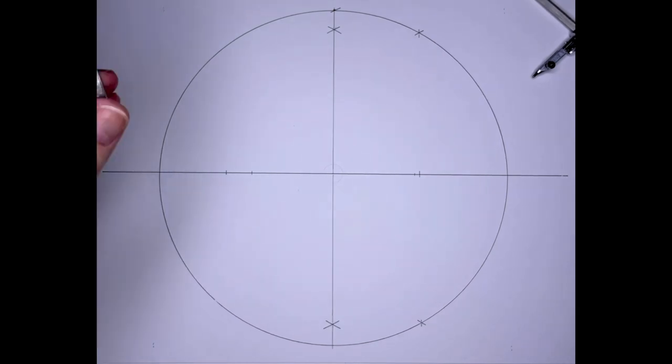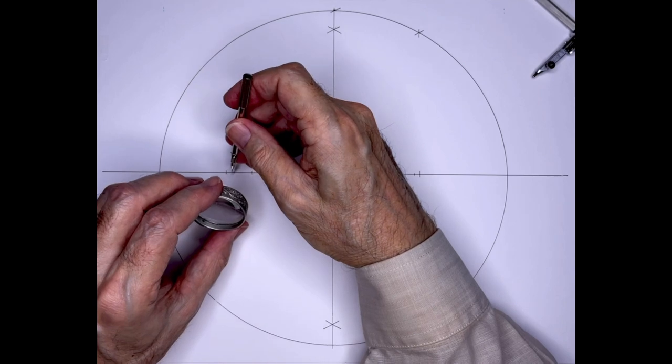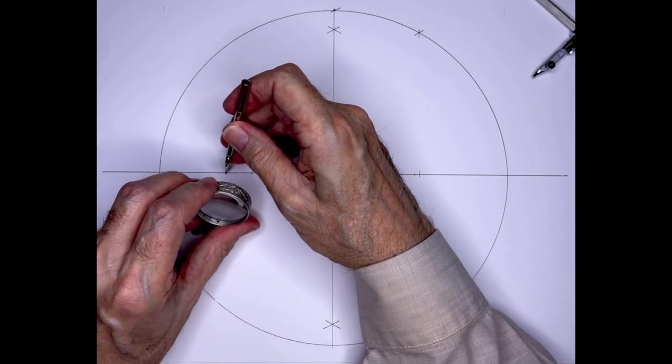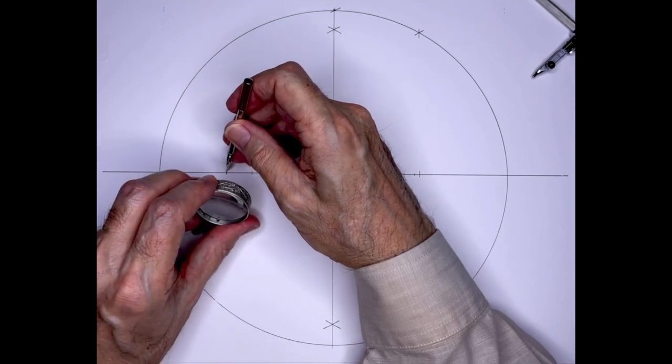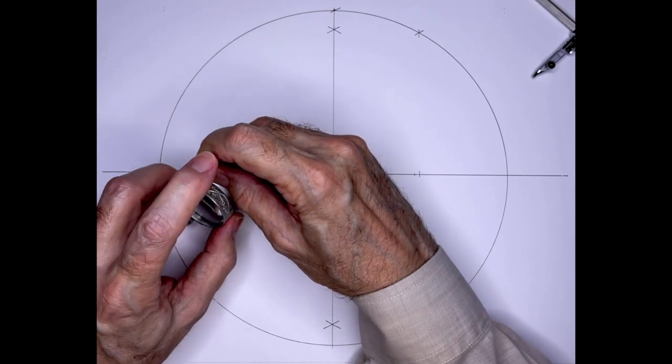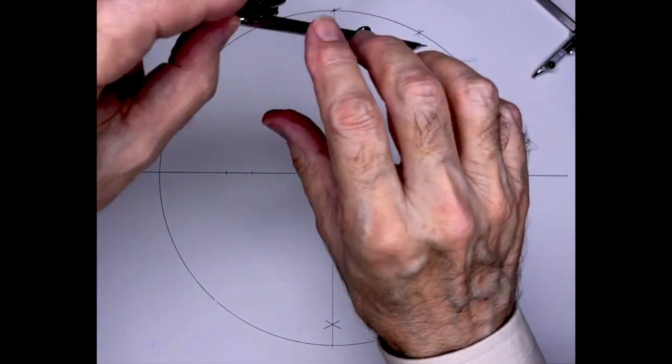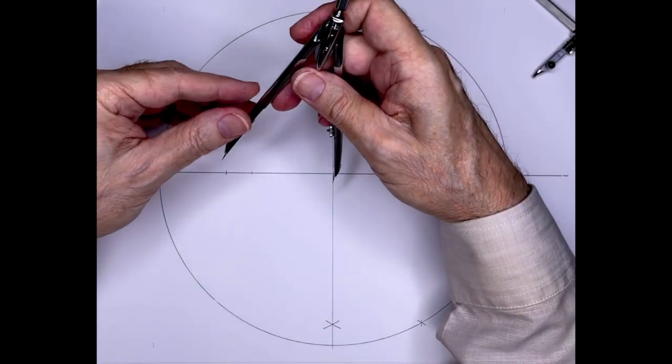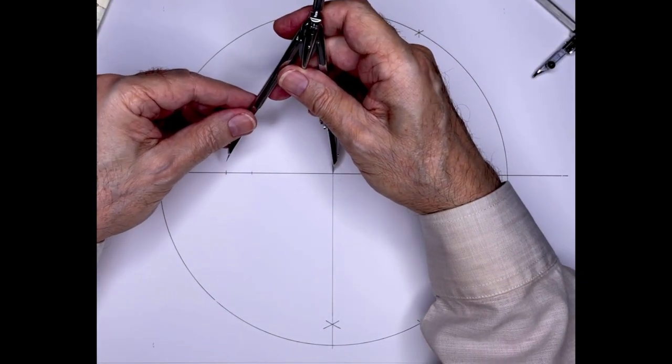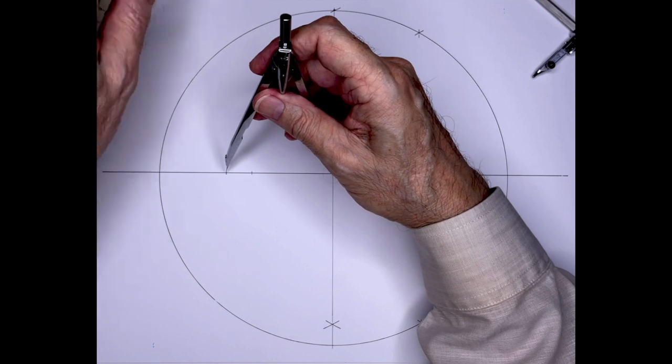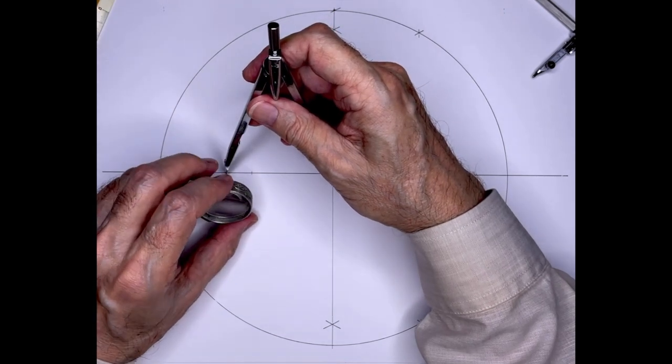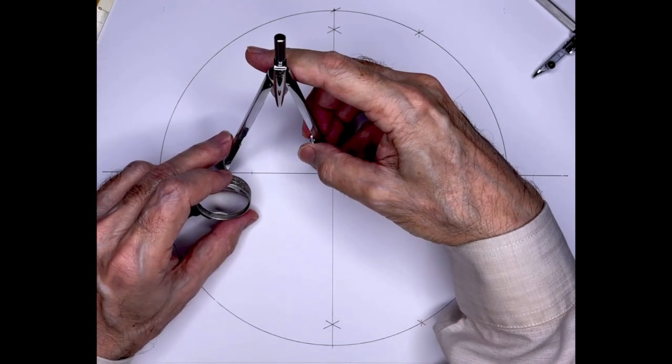If you go back to your triangle that we had over on the right-hand side, which is a one, two, square root of five, this is actually a square root of five minus one. It doesn't really matter, but that's what it is, and that is the side of a decagon. I'm going to complete this with dividers. You can do this with the compass, but the dividers are the correct tool for this. That's why they're called dividers.